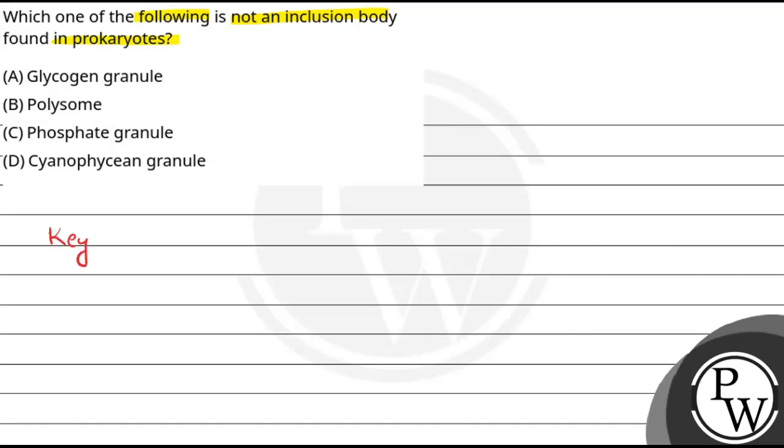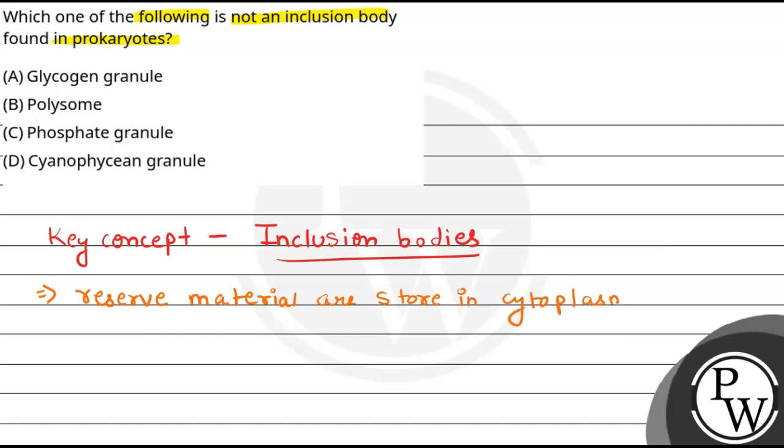So, if we talk about the key concepts, that will be inclusion bodies which are found in the prokaryotes. If we define inclusion bodies, we can say that they are basically a kind of reserve material which are found in the prokaryotic cells and are stored in the cytoplasm. These are all in the cytoplasm as the reserve material and we call them inclusion bodies.